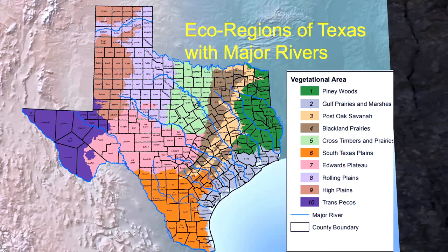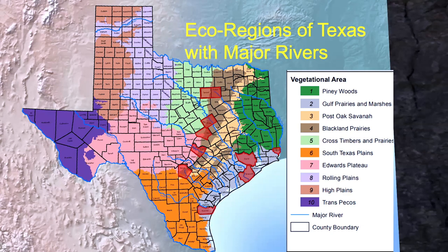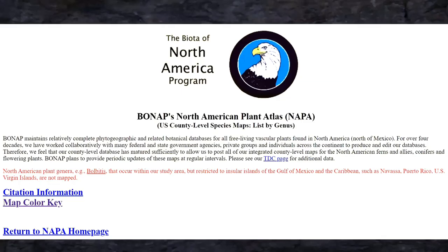Several of you are probably old enough to remember Ernest Tubb had a hit single called 'Waltz Across Texas' — and we're going to take a creek waltz across Texas. We're going to look at the vegetational areas of Texas. This is a neat map because it also has the major rivers of Texas. Several major urban areas intersect with these rivers, which causes issues with excessive erosion. We're going to look at creeks from all vegetational regions of Texas except the High Plains.